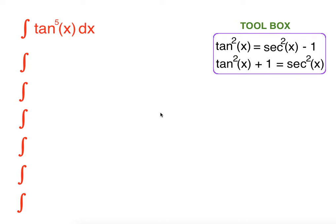Hi everyone! In this video we are going to integrate tangent fifth of x. For this integration it's useful to know tangent squared of x equals secant squared of x minus 1. This equation is derived from the trig identity tangent squared of x plus 1 equals secant squared of x.